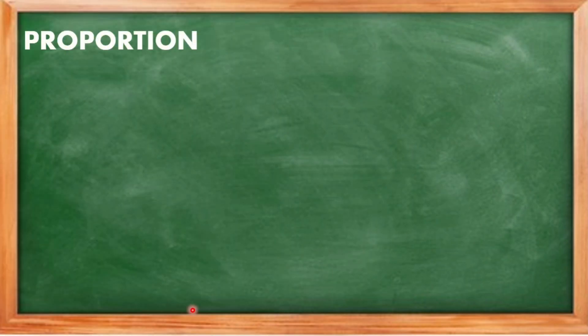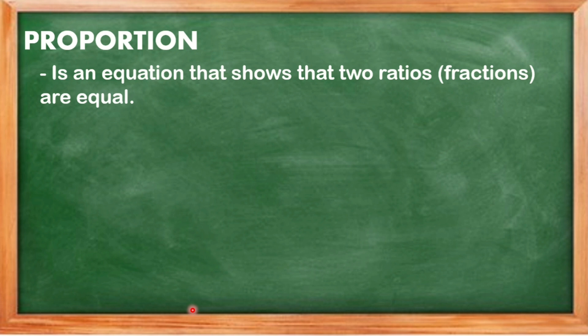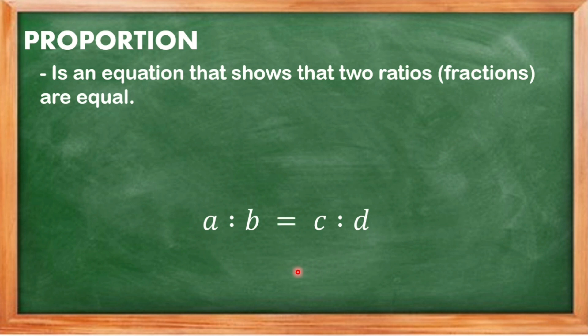Let us focus first on the definition of proportion. Proportion is an equation that shows that two ratios or fractions are equal. So let's say our ratio is A is to B and C is to D. These two ratios are always equal. Because two ratios are involved, we always have four terms: A, B, C, and D.